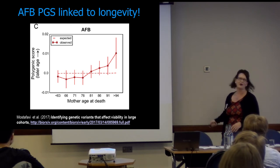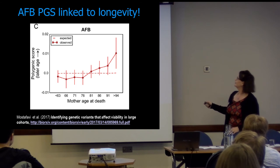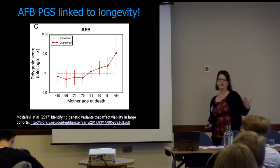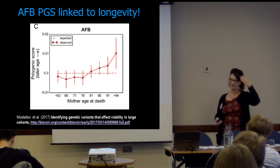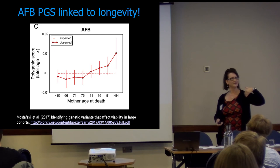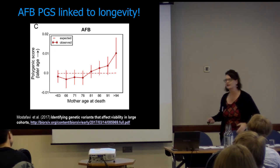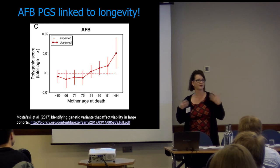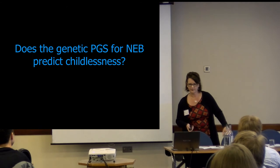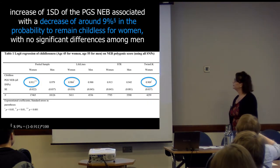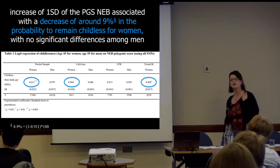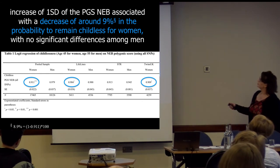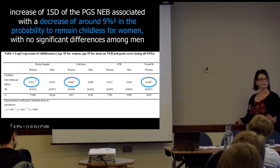Somebody else did it first — one of our co-authors even. It's published in PLOS Biology, and what they found: they used our age at first birth polygenic score and related it to mother's age at death. It appears that some people have a shifting of their entire reproductive period, and that's really interesting in terms of how we think about fertility and the life course. Our polygenic score for number of children ever born: if you have a higher propensity score, it decreases the probability that you'll remain childless for women — so it does have predictive power in models.